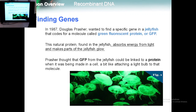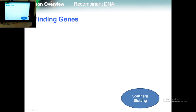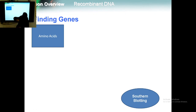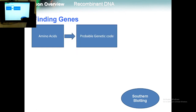This natural protein is found in jellyfish and absorbs UV energy from light, making parts of the jellyfish glow as you can see in the picture. Prasher thought that GFP from the jellyfish could be linked to a protein as it was being made in the cell — a bit like attaching a light bulb to that molecule. So he thought he could use this protein in another way.